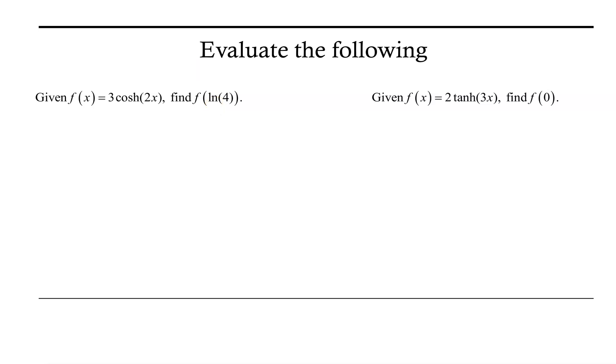So let's remind ourselves that cosh of x is equal to e to the x plus e to the negative x, all divided by 2.